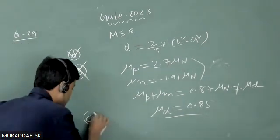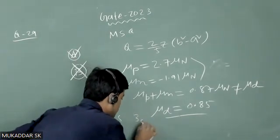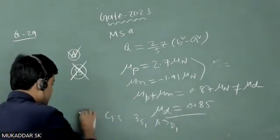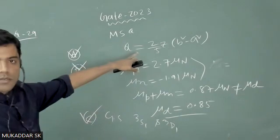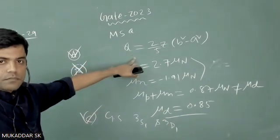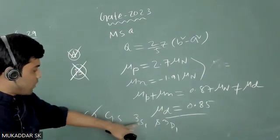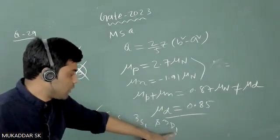In option C, the ground state of a deuteron is given as a mixture of 3S₁ and 3D₁. This is perfectly fine because we know there is a non-spherical distribution of charge, and that is arising because of a mixture of 96% 3S₁ with 3D₁.